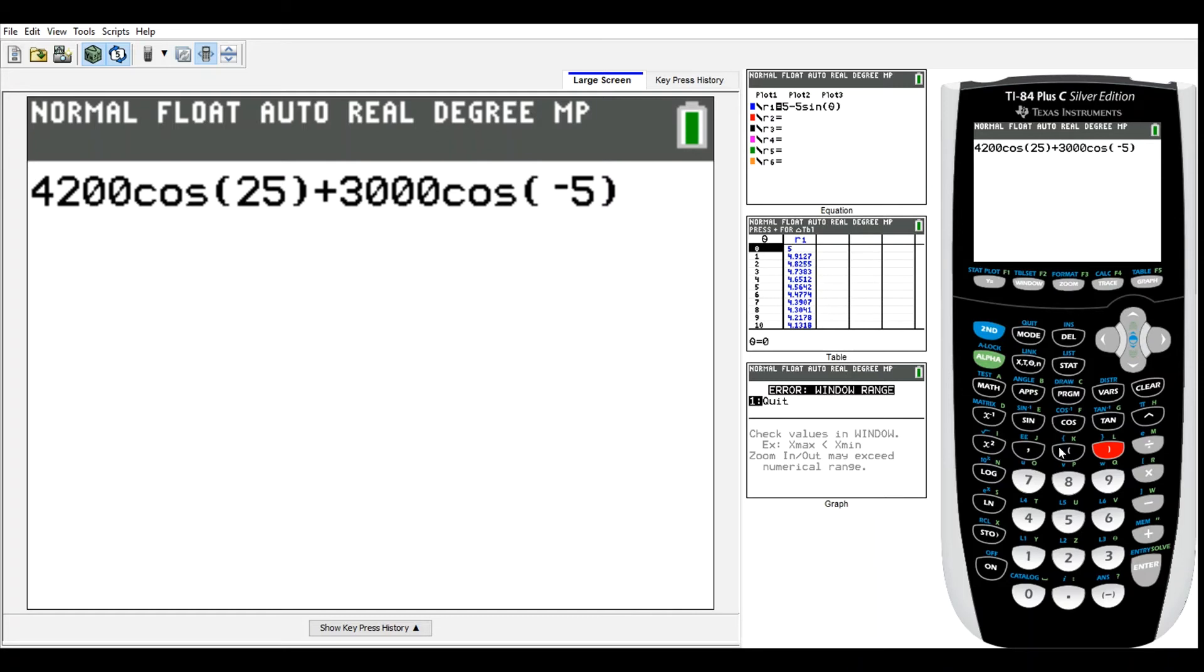And so that all looks good. That should be our horizontal component. And I'm going to store this in my calculator as A. So I'm going to hit STO here, and then I'm going to hit alpha A, because that's what I decided to store it as. And let's hit enter.